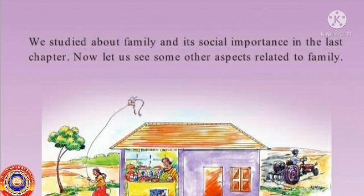All of you look at the picture. We can see the members of this family — father, mother, and children — engaged in different activities. What are they doing? Father is ploughing the land using a tractor. Mother is running a vegetable shop near the house. The daughter is flying a kite in the courtyard. Father and mother are engaged in income-earning activities.